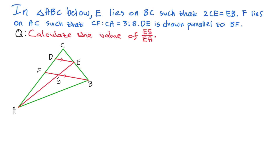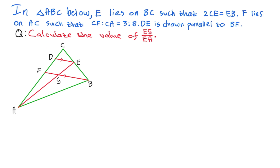They say such that 2CE equals EB, so there's a relationship between CE and EB that we're going to explore. And they say F lies on AC, such that CF is to CA equals 3 is to 8 — we see the ratio. And DE is also drawn parallel to BF.